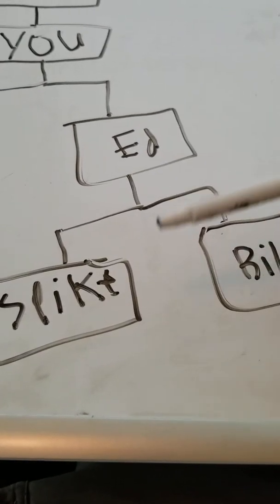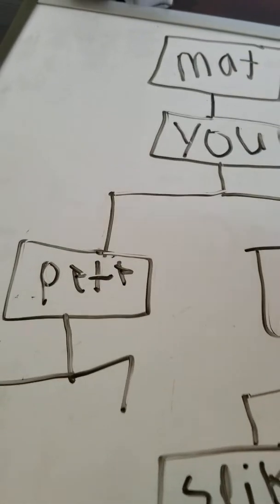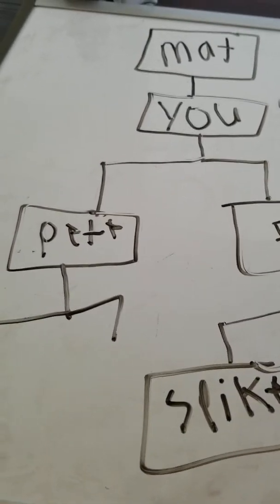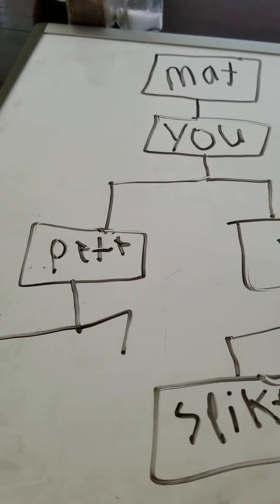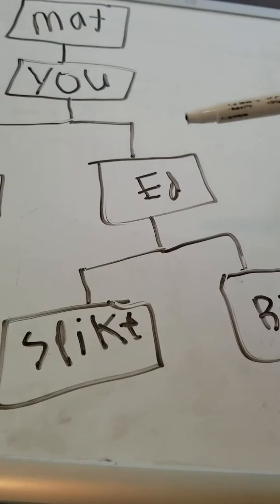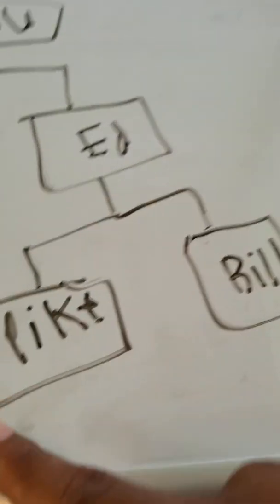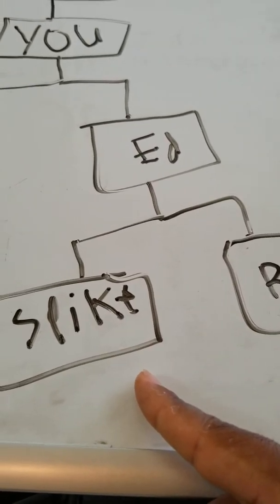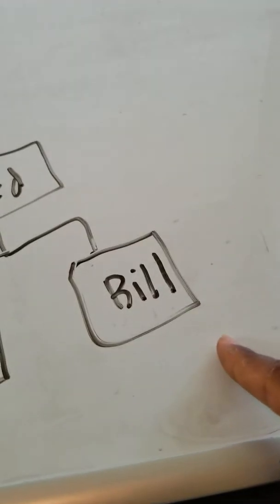Ed don't get money, but guess who gets this money? You do. You get the money from these two people that Ed brought in because they all fall under you. So this was payline one. You'll get $100 from Spike and Bill coming in.